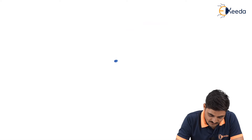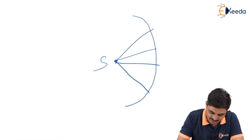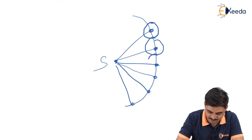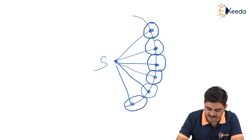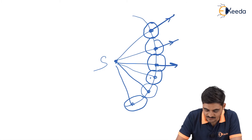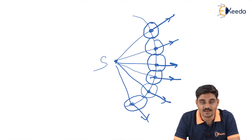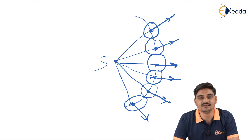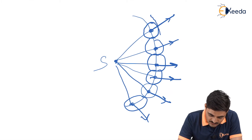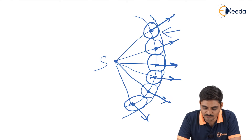Let us assume that we have a source producing a spherical wavefront, and it spreads out in the forward direction to form the next wavefront. The next wavefront represents the position of the light rays. To find the next wavefront, we draw a tangent to all these wavelets, and that gives us the position of the next wavefront.